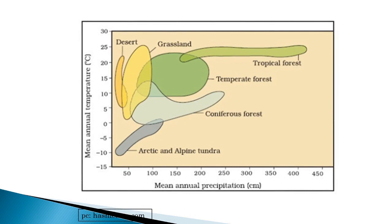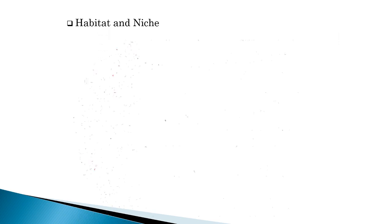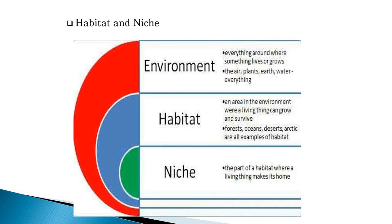Here we can see a graph of different kinds of habitats — desert, grassland, temperate forest, tropical forest, coniferous forest. A habitat is an area in the environment where a living thing can grow and survive — for example, forests, oceans, deserts, and arctic regions. The niche is a very important term; it is the part of the habitat where a living thing makes its home.